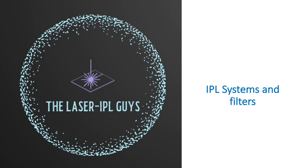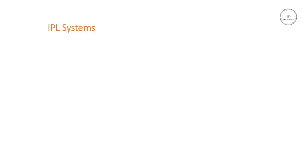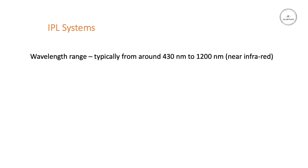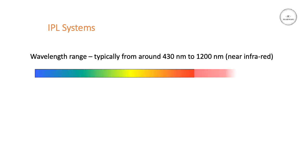In this presentation, I will be discussing IPL systems and the choice of filters. IPL systems can output a wide range of wavelengths, typically from around 430 up to 1200 nanometers, which is in the near infrared part of the spectrum.